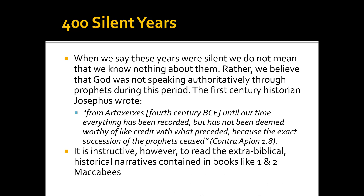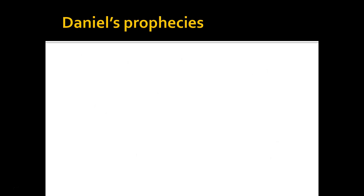It is instructive for us to read extra-biblical historical narratives contained in books like 1st and 2nd Maccabees. There are some churches — the Catholic Church and the Greek Orthodox Church, for instance — that would include what we refer to as the Apocryphal books in their Bibles. Some Bibles refer to them as deuterocanonical, a second canon. The word apocryphal means that they were hidden. Generally, most Evangelical Christians would not include these as part of Scripture, though we do find them instructive for reading and learning from.